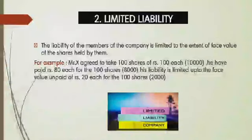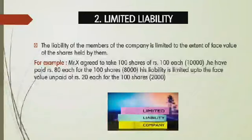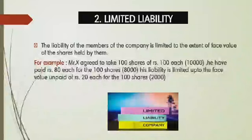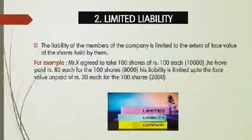The next one is limited liability. The liability of the members of the company is limited up to the value of the shares they agreed to pay. For example, if Mr. X agreed to take 100 shares of rupees 100 each, the total amount is ten thousand. He has paid rupees 80 per share, so he paid eight thousand. His liability is limited to the unpaid value — rupees 20 on 100 shares, that is two thousand. Members are liable to pay the unpaid value of shares only.